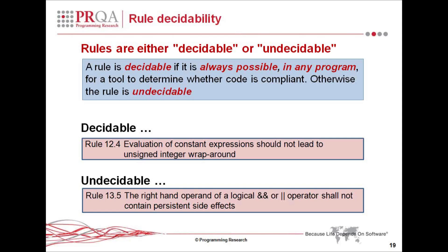Rule 13.5, on the other hand — the right-hand operand of a logical AND or logical OR operator shall not contain persistent side effects. The problem with a rule like that is that while in many cases it may be decidable, it cannot always be enforced. A static analysis tool cannot always determine whether the right-hand operand of one of those operators contains persistent side effects. To do so, it would need access to the entire calling tree of the program and all the code, and even then it is theoretically not possible to guarantee that the rule is always complied with.